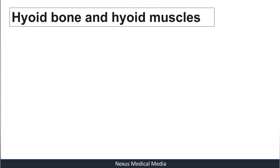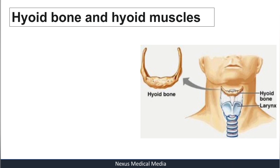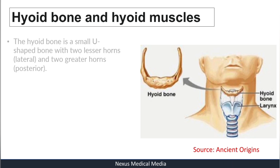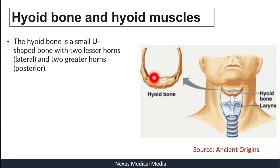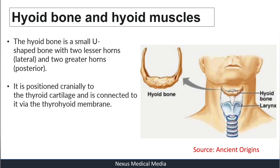Welcome to Nexus Medical Media. In this video we are going to talk about the hyoid muscles, but first let's review the hyoid bone. This bone doesn't articulate with any other bone — it's lodged within the soft tissues. It is a small U-shaped bone with lesser horns, which are lateral, and greater horns, which are posterior. It is positioned cranially to the thyroid cartilage.